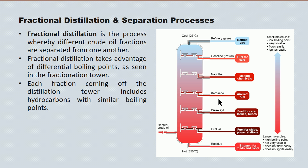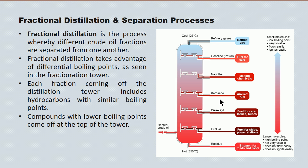For example, here's the kerosene fraction — a mixture of a great number of hydrocarbons with a similar boiling point. Compounds at the top of the tower have very low boiling points: these are the gases — natural gas, propane, and so on. They are very volatile and ignite quite easily.